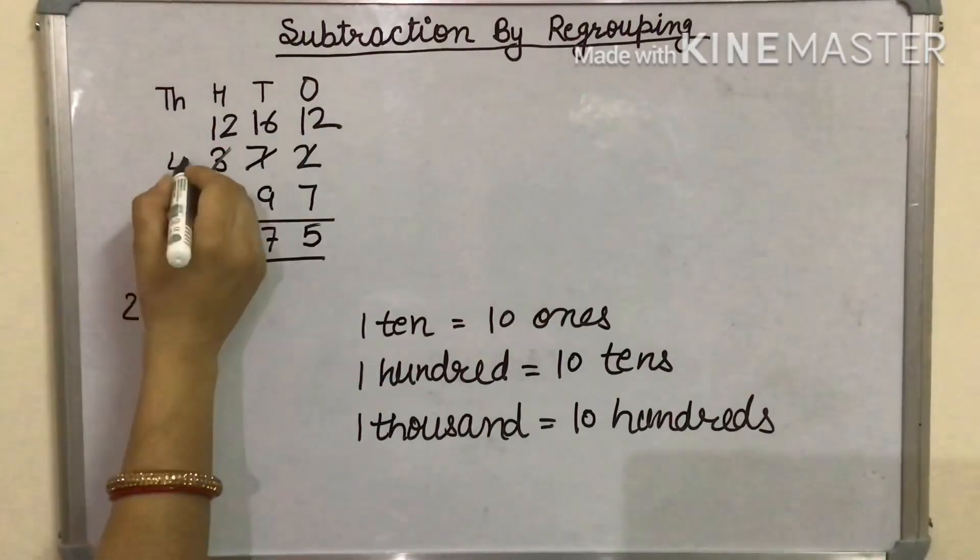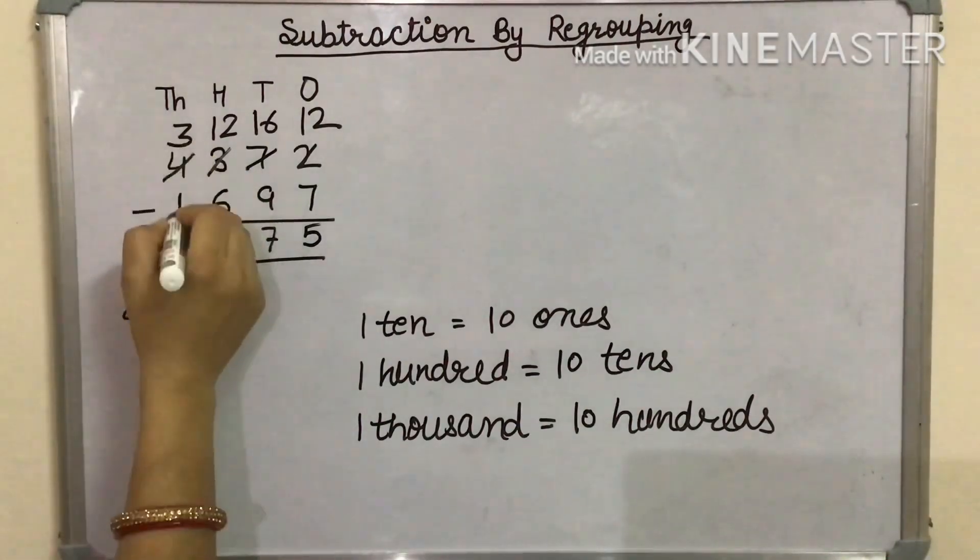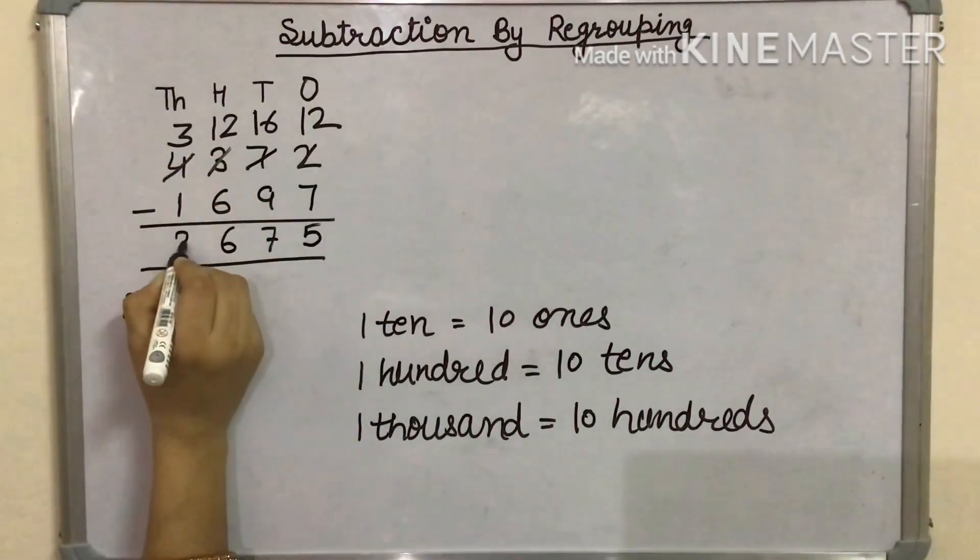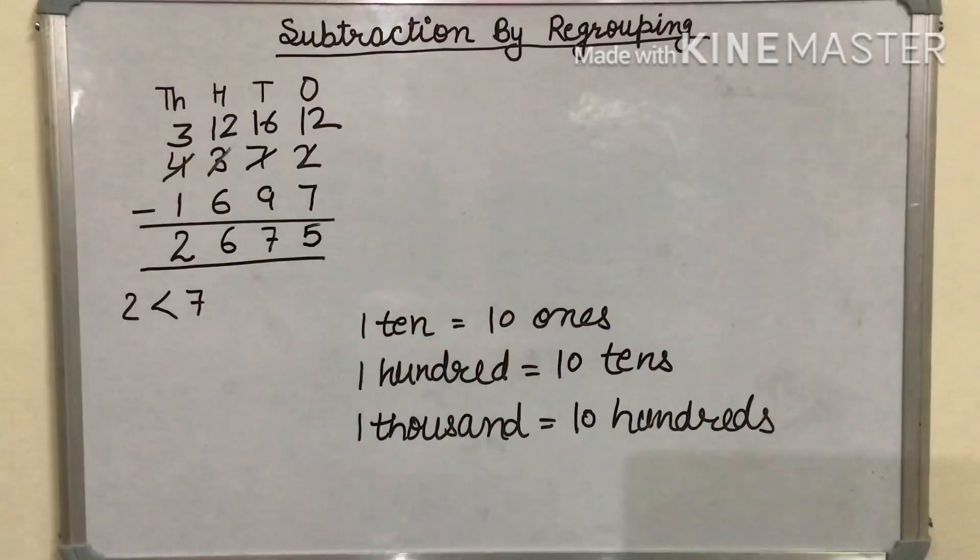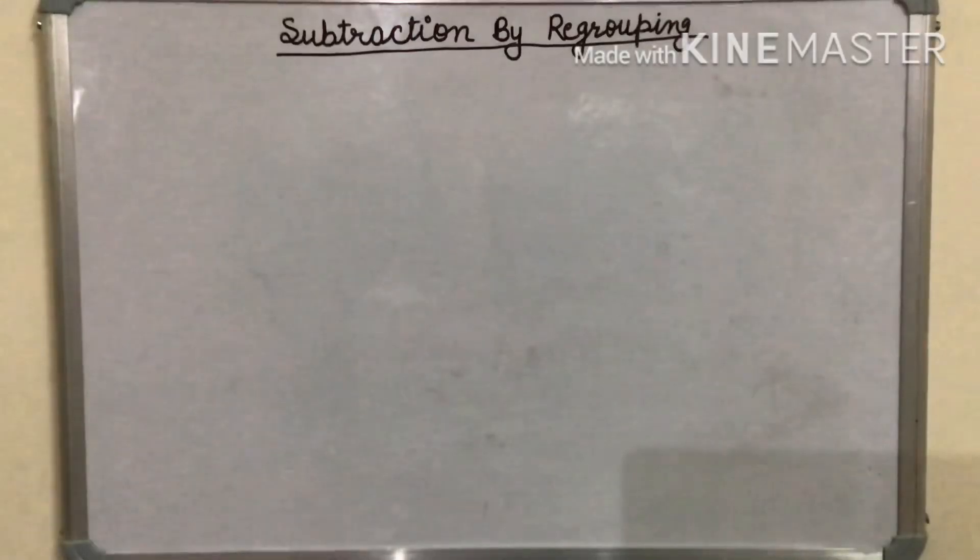At the 1,000th place, it will be 3. We subtract 1 from 3, the answer will be 2. Like this, our difference is 2,675. Let's take another example.